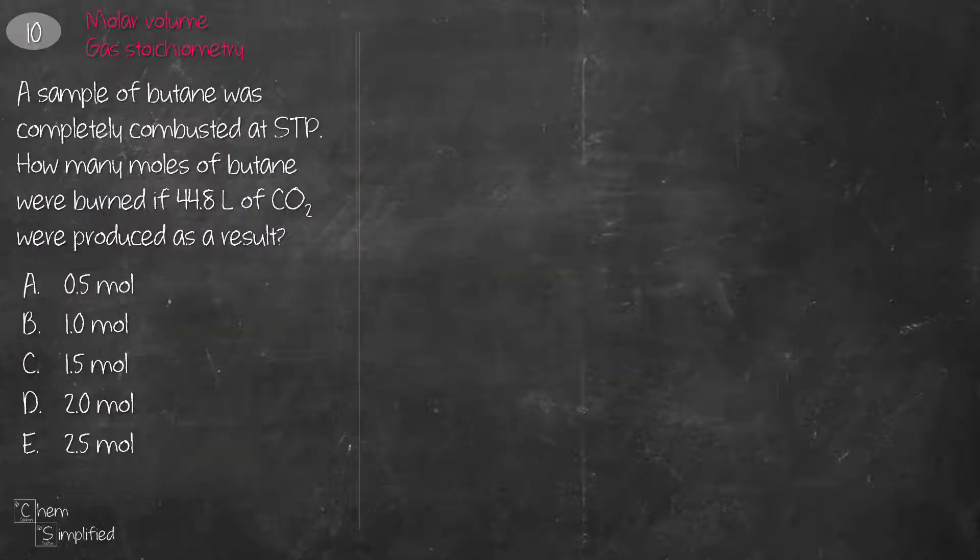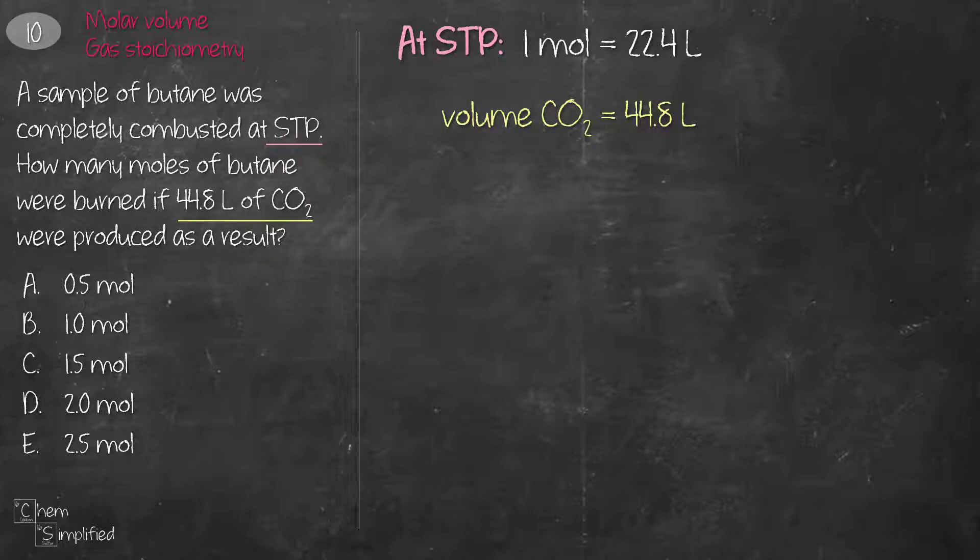This next question is on molar volume and gas stoichiometry. We're told that the combustion of butane happened at STP, which means one mole of any gas is going to have a volume of 22.4 liter. We're also told that the volume of carbon dioxide is 44.8 liter. We can find the mole of CO2 by using the molar volume, which is one mole, 22.4 liter. And that works out to be two mole of CO2.